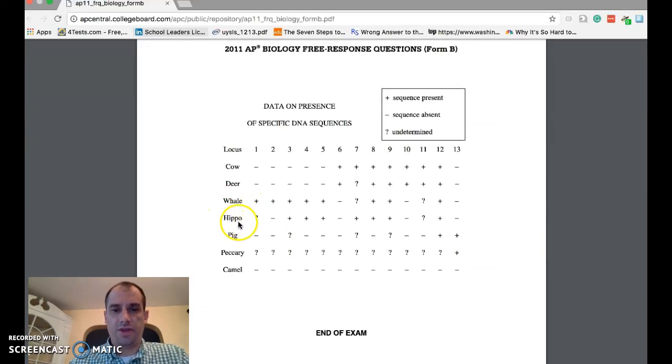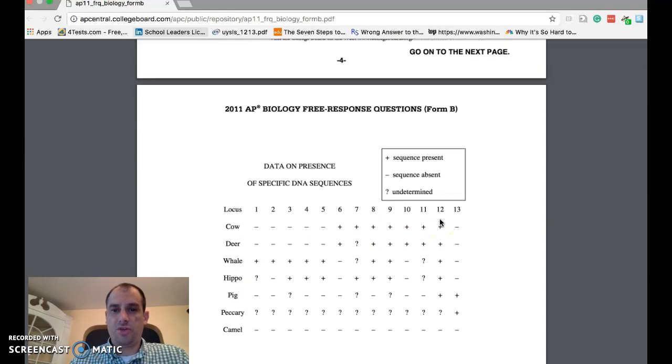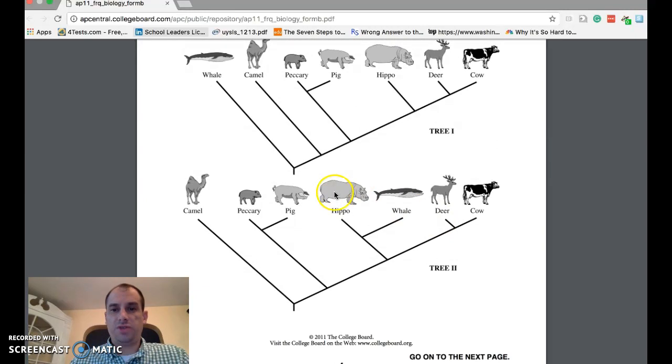Let's look at the whale and the hippo. The whale and the hippo have the following sequences identical. Let's count them up. We're looking for a plus, a minus, or a question mark. For example, if both of these have a plus, they have the same sequence at this position. So the whale and the hippo have one identical sequence. Two, three, four, five, six. This would align with this tree, meaning the whale and the hippo have six similar DNA sequences. And so they would be closely related.